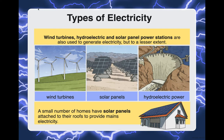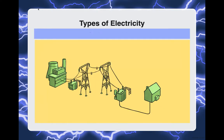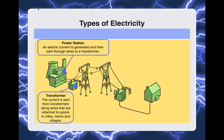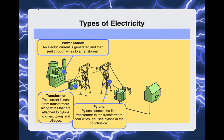We may have seen these around — there are some wind turbines here in California, and you've probably seen some solar panels on homes too. From the power station, an electric current is generated and sent through wires to a transformer. From the transformer, the current is sent along wires attached to pylons to cities, towns, and villages. The pylons connect to transformers near cities.